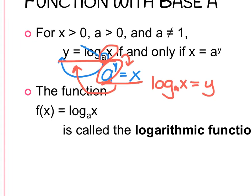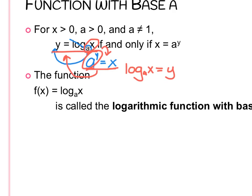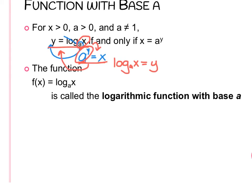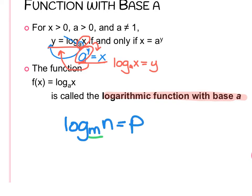If you put an F of X in the place of the Y, now this is called a log function. F of X and Y are interchangeable — with F of X it's a function, with Y it's an equation. So if I had log base M of N equals P, the M is going to come across and pick up the P. The P becomes the exponent, drops off, and leaves just the N by itself.